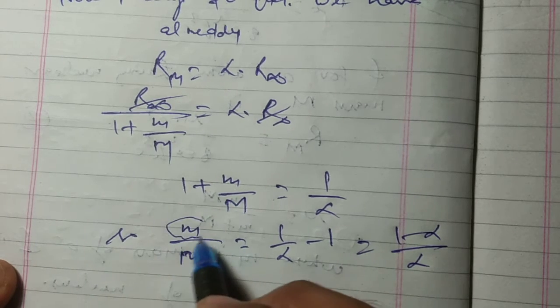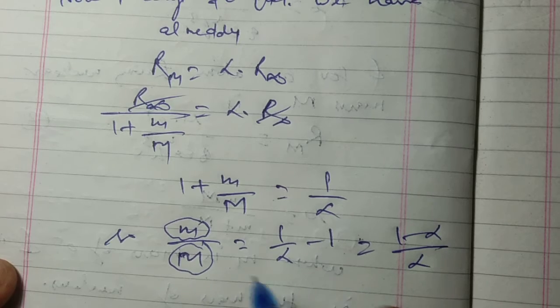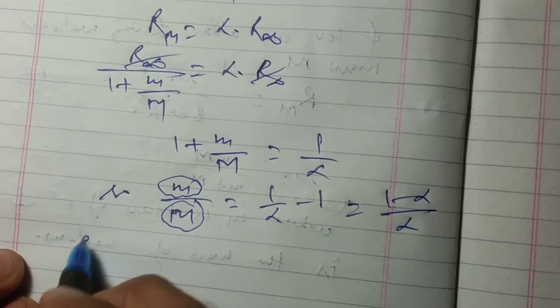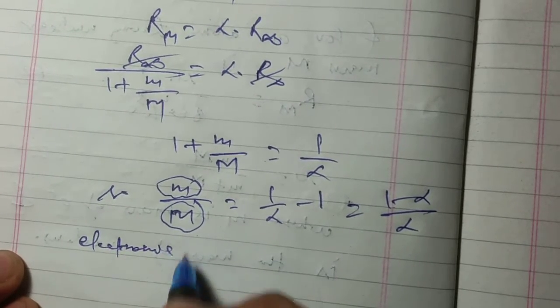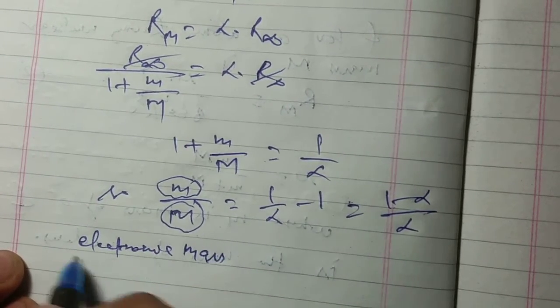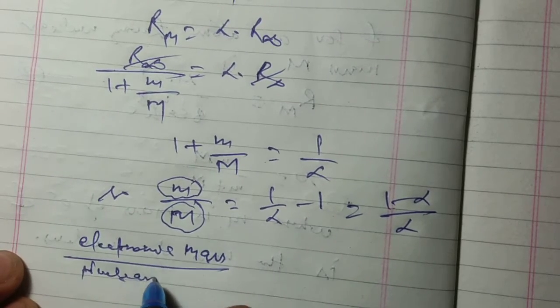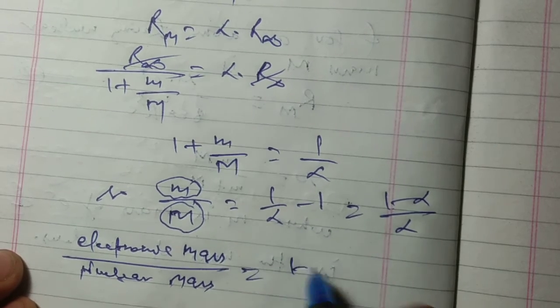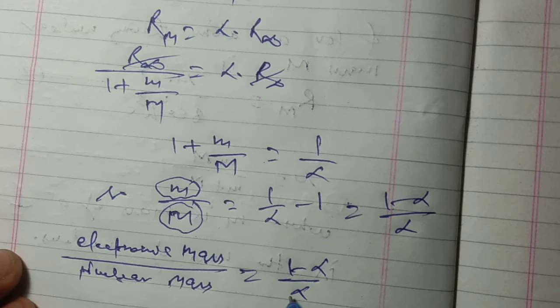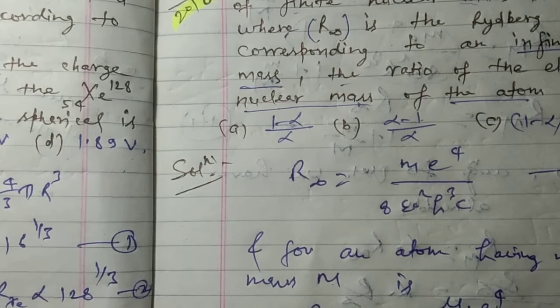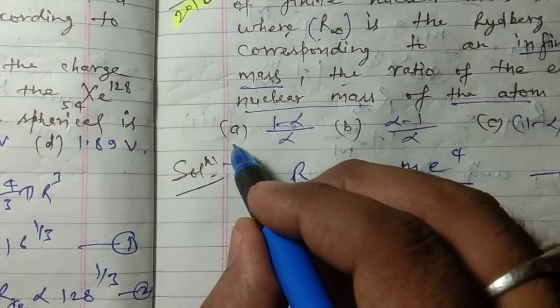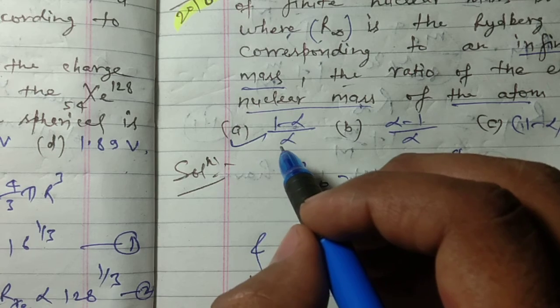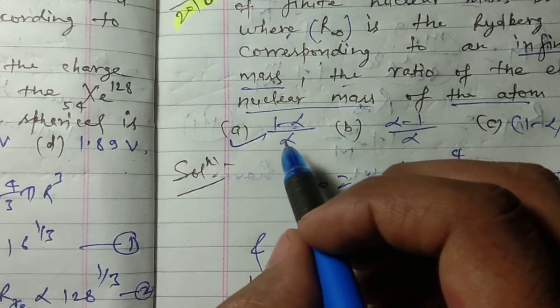So this gives m/M = (1-α)/α, where m is the electronic mass and M is the nuclear mass. The correct option is (1-α)/α. So this is all about for today. Thanks for watching, thank you.